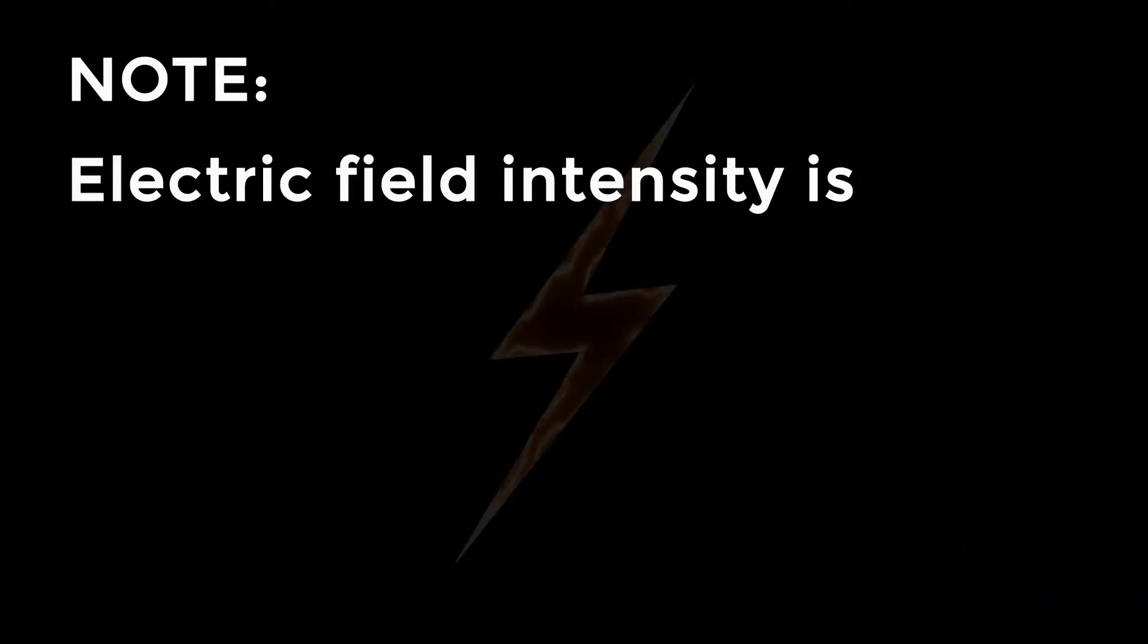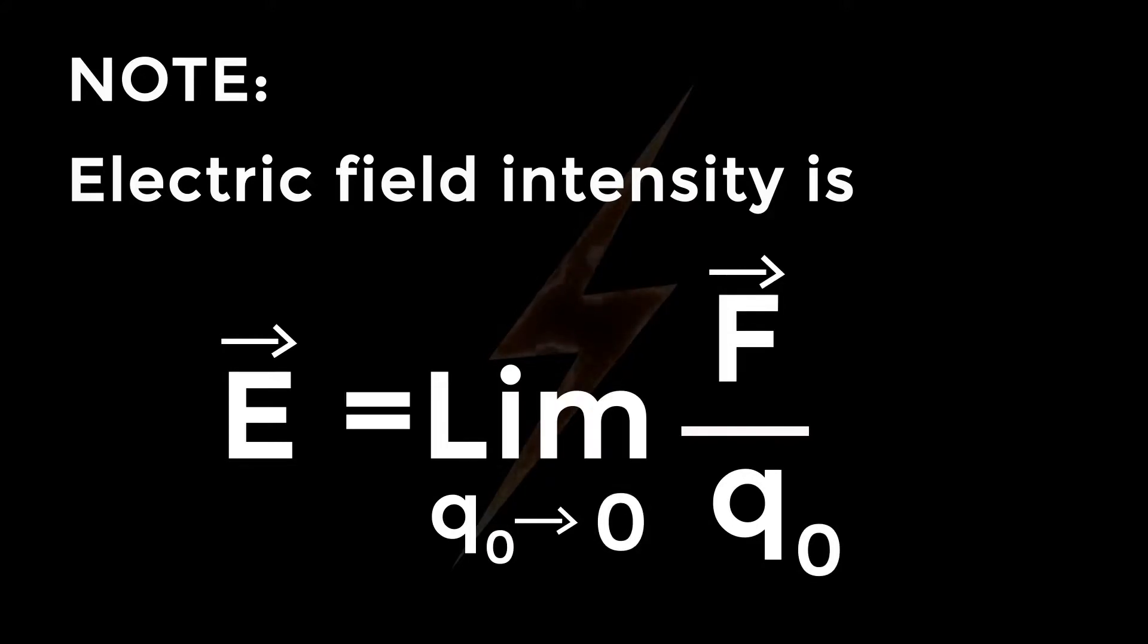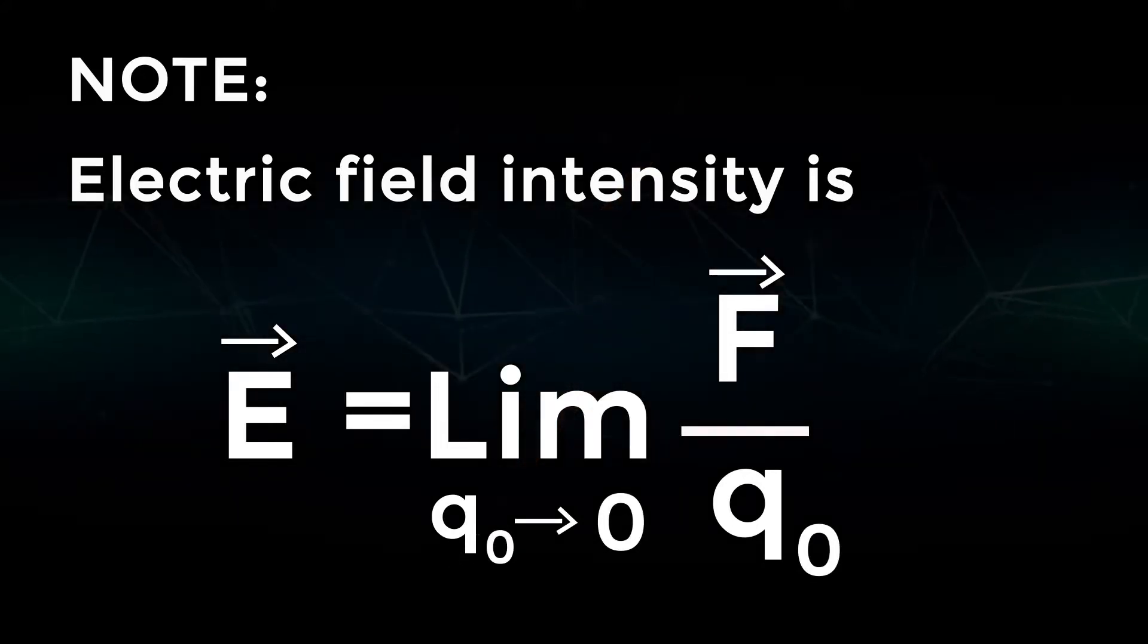Note: The accurate formula for electric field intensity is E vector equals limit as q₀ tends to zero of F vector divided by q₀. When we introduce the test charge, it will change the electric field due to charge Q. For this reason, the magnitude of q₀ should be as small as possible, that is, tending to zero.